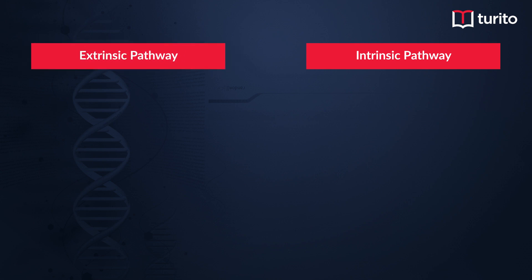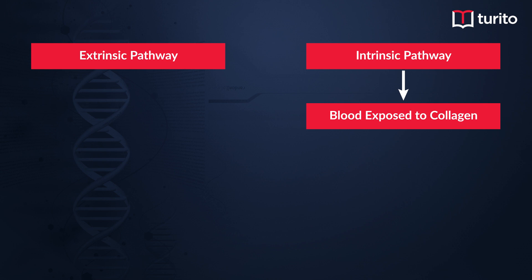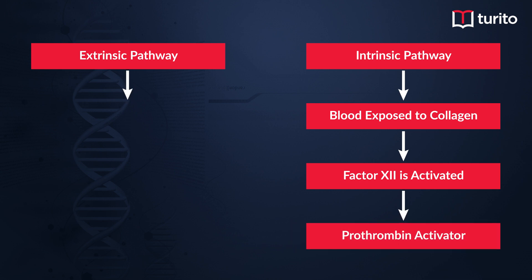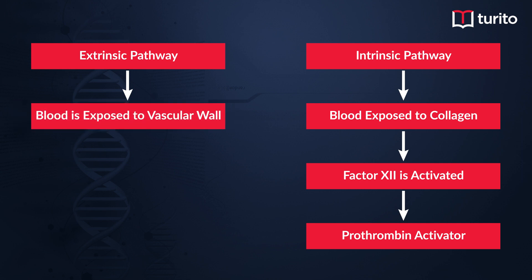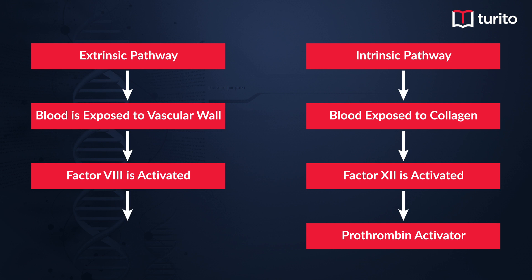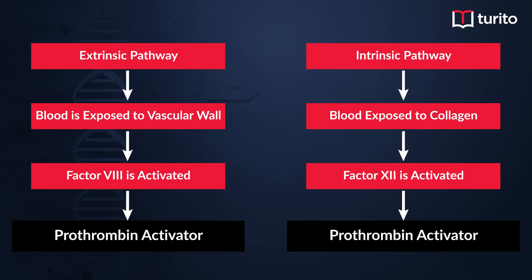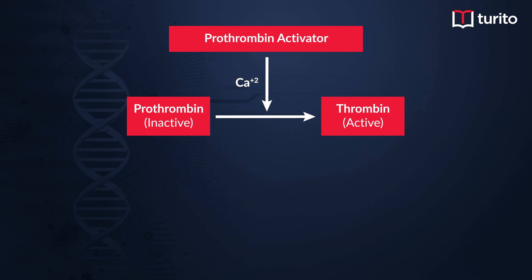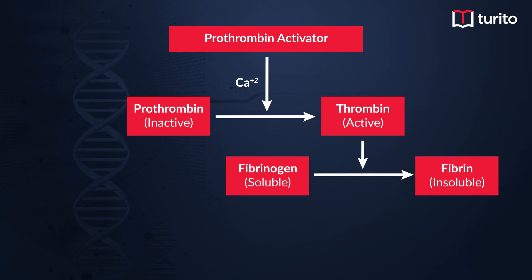In the intrinsic pathway, when blood is exposed to the vasculature wall, factor 8 is activated. Factor 8 forms the prothrombin activator, and in both pathways the prothrombin activator is formed. Prothrombin activator converts the inactive prothrombin factor into active thrombin, in the presence of calcium. Thrombin then converts soluble fibrinogen fibers into insoluble fibrin fibers. These insoluble fibrin fibers form a mesh near the platelet plug, finally forming a clot that obstructs the bleeding of blood.